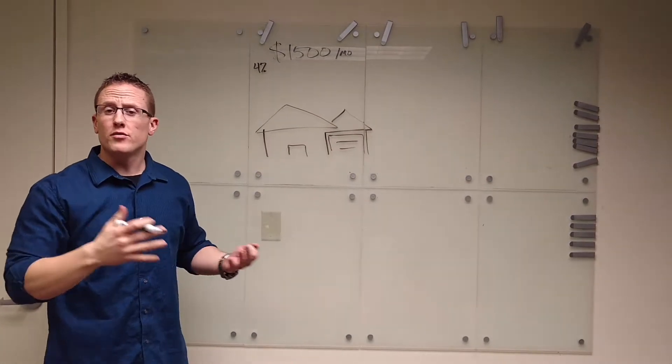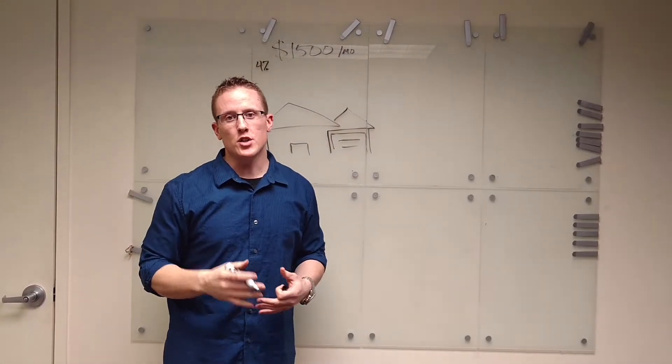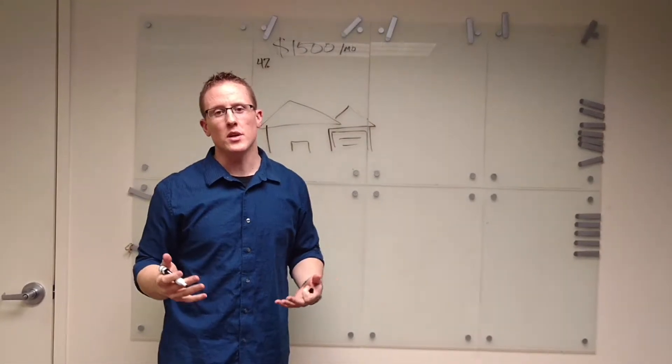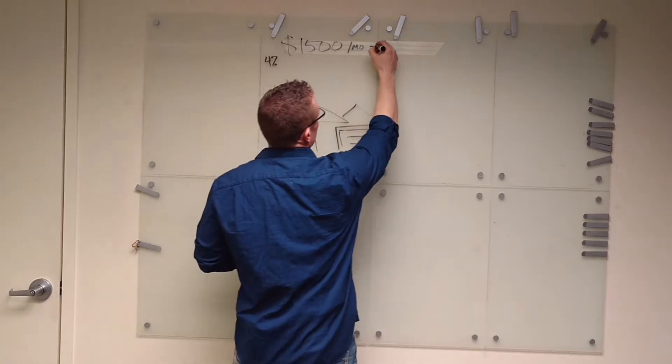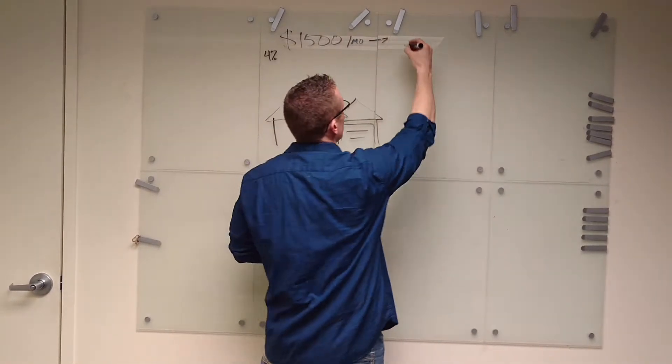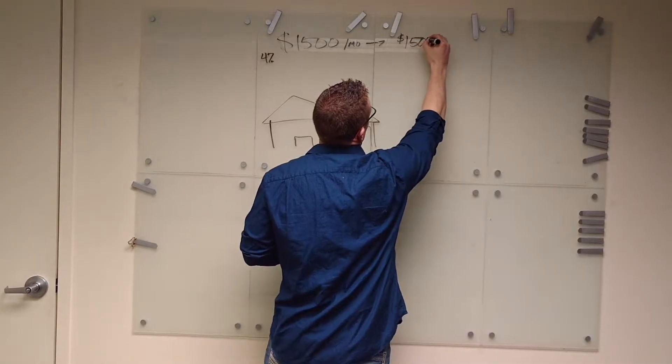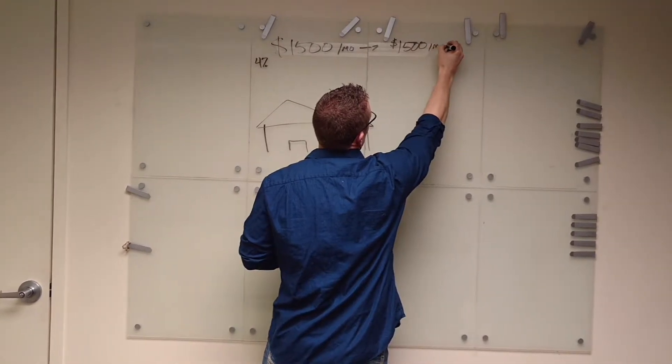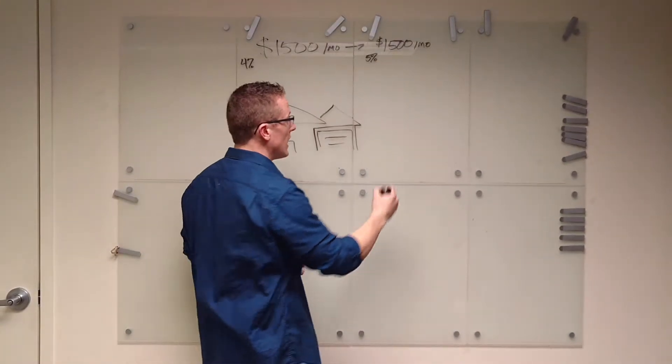Now if the interest rates go from 4% to 5%, just 1%, you're looking at about a 10% reduction. And that holds true across all price points. For every 1% in the interest rate, it'll affect the monthly payment about 10%. So let's take your same $1,500 a month payment, and we're now at 5%. What does this do for the home that you can buy?